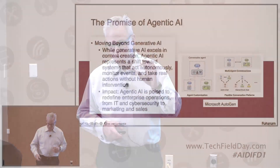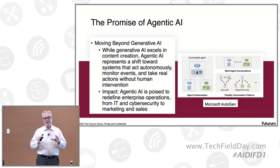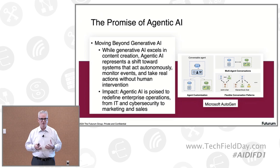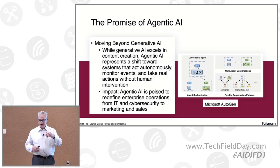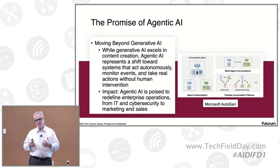Agentic AI is the idea that instead of just having an interface with a computer that is AI-based — essentially a large language model that you talk to — the idea of agentic AI is that you would have an autonomous AI agent that would act on your behalf, essentially automating various processes for you.